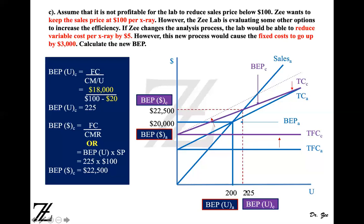In the graph, 225 units need to be sold to reach the break-even point. For break-even point in dollars, 225 units times the selling price of $100 means Z-Lab has to sell $22,500 worth of services to reach the break-even point.